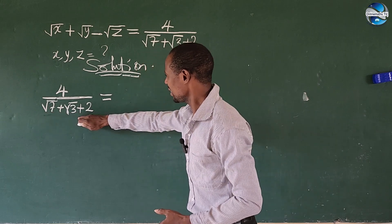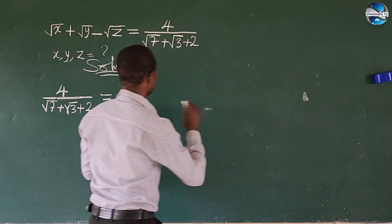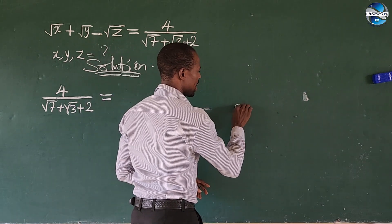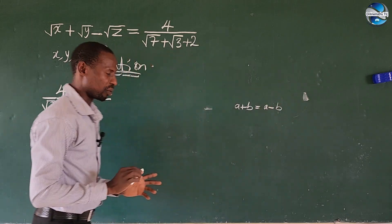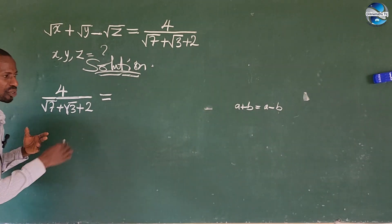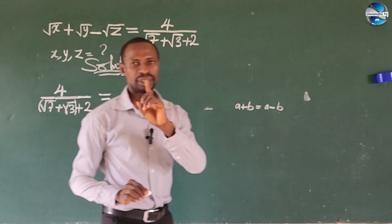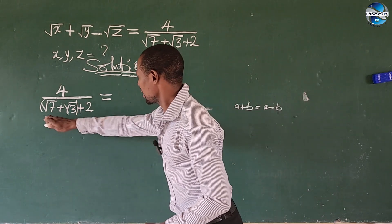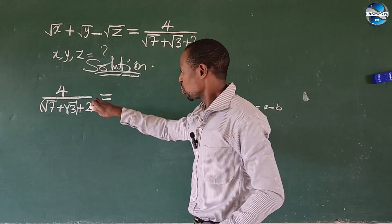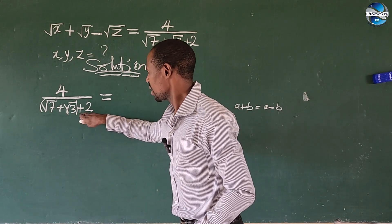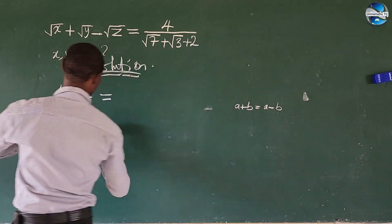We cannot find the conjugate of this directly. Remember, if we have something like A plus B, the conjugate gives us A minus B — straightforward. But look at the three terms we have here. What we do is put root 7 and root 3 in a bracket to form one entity. So the conjugate of that entity will be whatever we have in the bracket minus 2. So as we rationalize, we multiply both numerator and denominator by the conjugate.